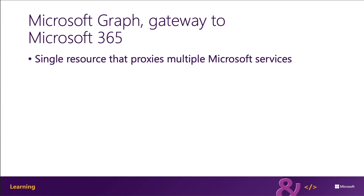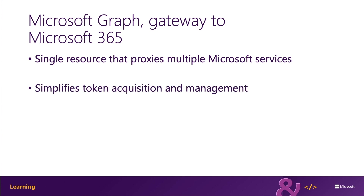Microsoft Graph encompasses Office 365, Windows 10, Enterprise Mobility, and Security, bringing all of these different services under one unified endpoint: graph.microsoft.com. This allows developers to have just a single endpoint and only need a single access token to authenticate across different services. Each service still has its own individual permissions so that everything remains secured individually. A single endpoint makes it easier for developers to build applications.